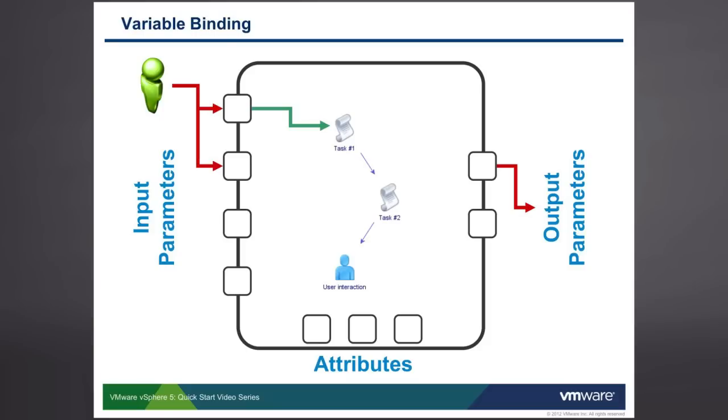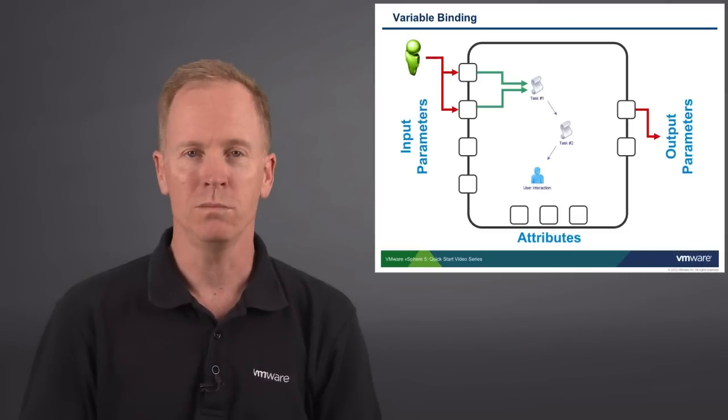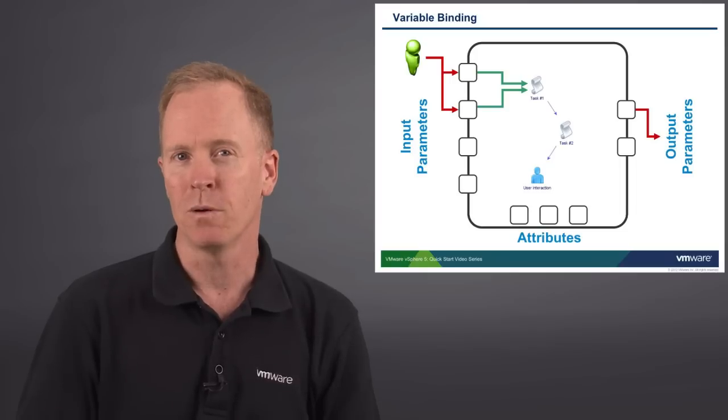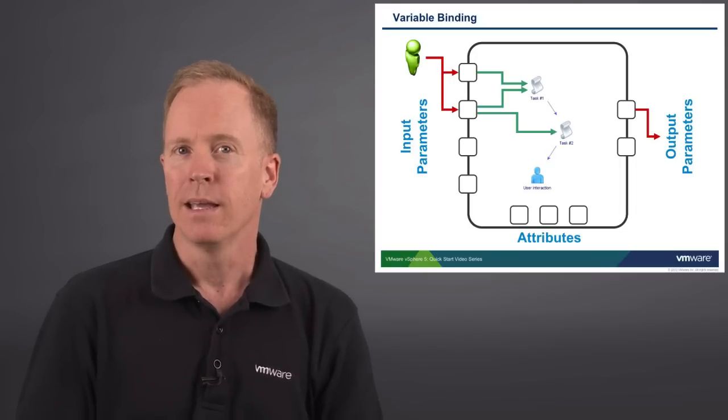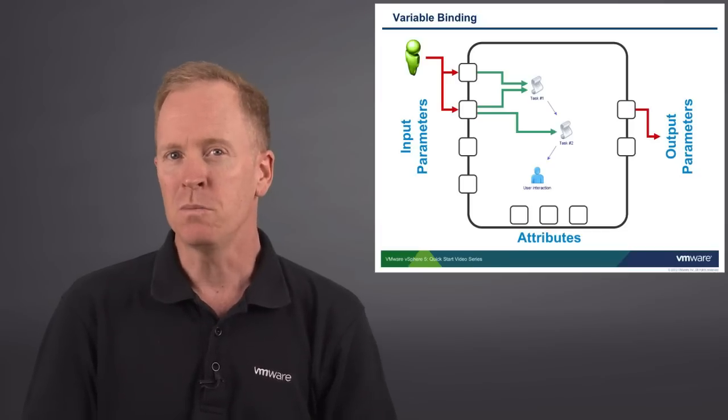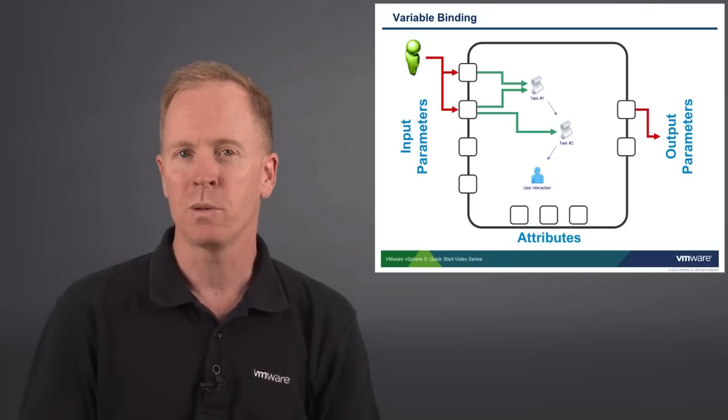If we continue on, you'll notice that a single schema element, such as task one, can be supplied multiple input parameters by simply setting up the variable binding for each input parameter. It's totally normal and totally expected for a schema element to have multiple variable bindings. Similarly, it's possible for an input parameter, such as the second one in our display here, to be bound to multiple schema elements.